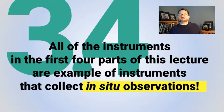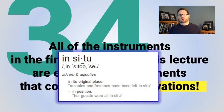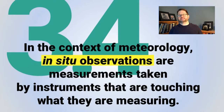All the instruments we're going to be talking about in the first four parts of this lecture are examples of instruments that collect what we call in situ observations. Depending on what atmospheric science courses you may have had before, you may or may not already be familiar with this term. In the context especially of meteorology, in situ observations are measurements taken by instruments that are touching what they're measuring. A thermometer measures the temperature of the air that it's touching. A barometer measures the pressure of the air that it's touching.